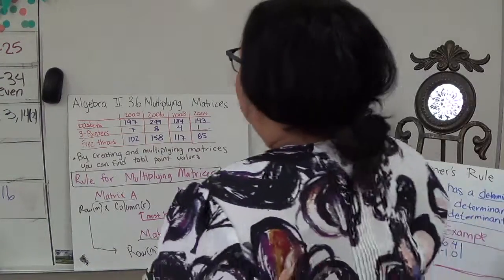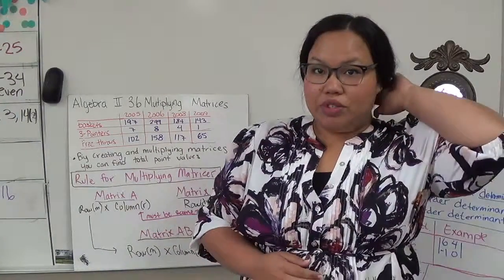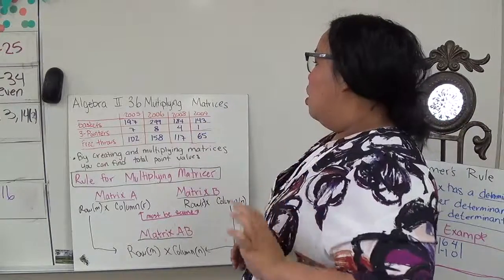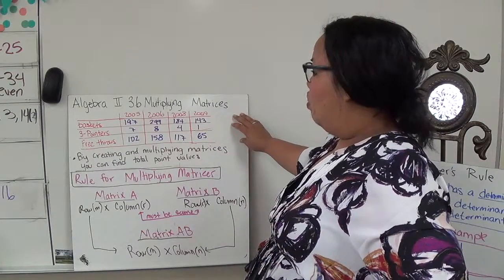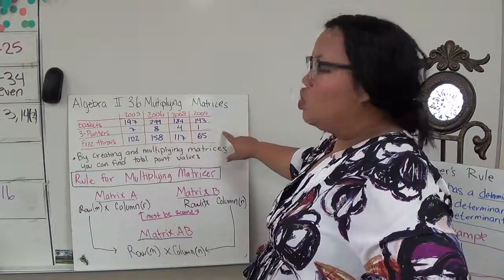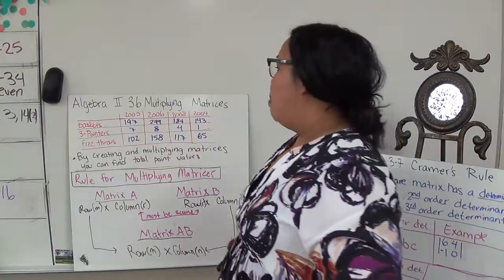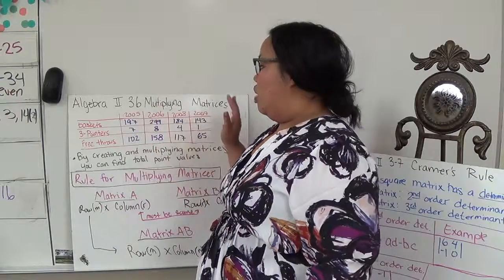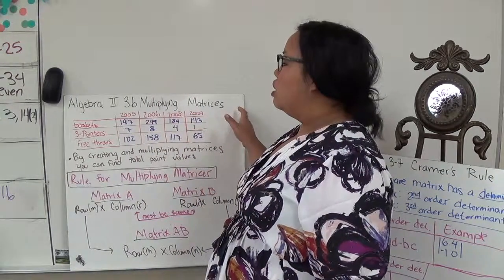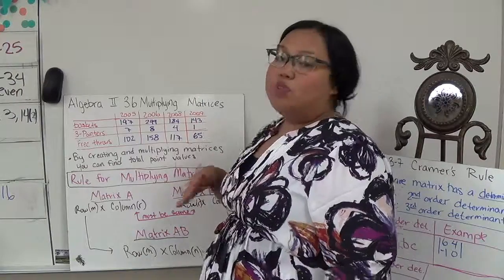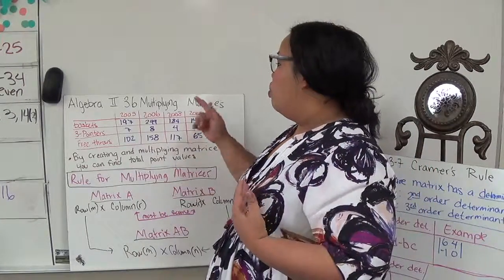In Algebra 2, Section 3.6, we're dealing with multiplying matrices. When we're having information — for instance, this is the score of a player's baskets in different years — and I want to find out how many points this person did total for each year.